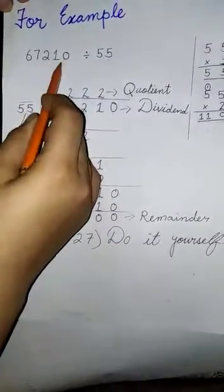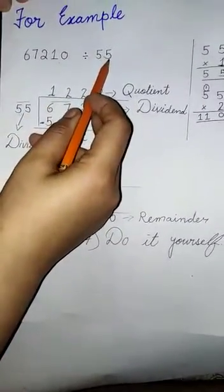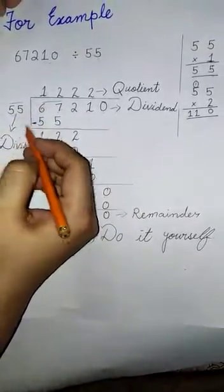Okay, we divide a 5-digit number by a 2-digit number. We put this value like this.